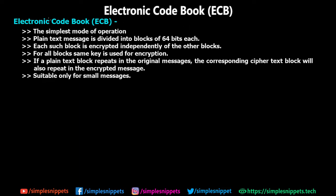Starting off with a little bit of theory — ECB is the simplest mode of operation. The plain text message is divided into blocks of 64 bits (though it can be more). Each block is encrypted independently of the other blocks. The same key is used for both encryption and decryption across all blocks. If a plain text block repeats in the original text, the corresponding cipher text block will also repeat in the encrypted message.